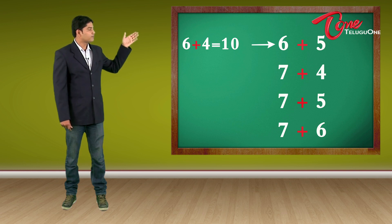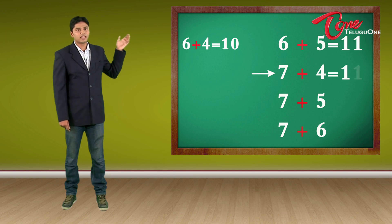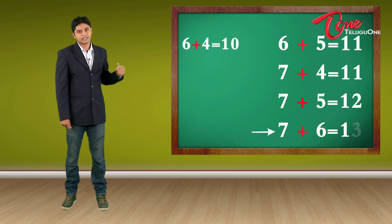So 6 plus 5 would be 11. Similarly, 7 plus 4 will also be 11. Now 7 plus 5 and 7 plus 6 is 12 and 13.